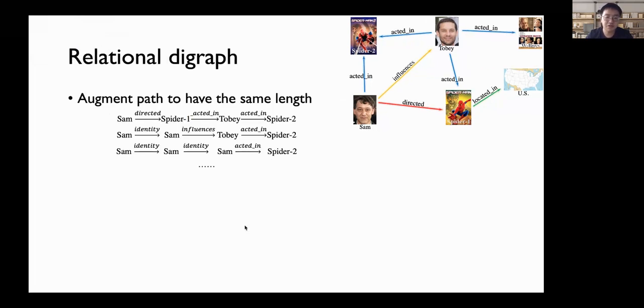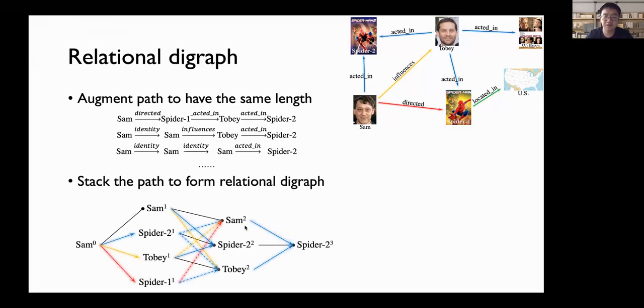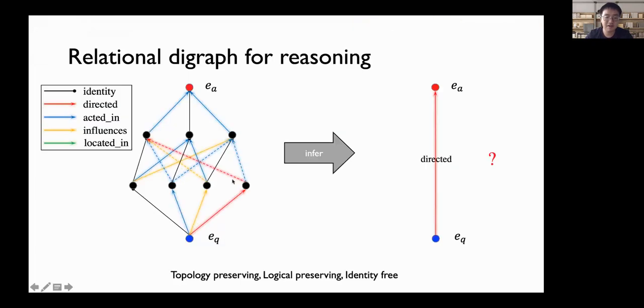We propose a new relational structure called relational digraph for subgraph reasoning. First, we augment different paths to have the same length, then we stack paths to form the relational digraph. By ignoring the identities of entities, we aim to use the relations in the relational digraph to infer the query relation. Such a new structure is topology-preserving, logic-preserving, and identity-free.